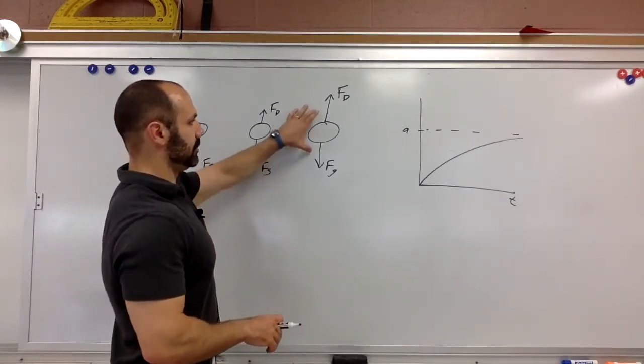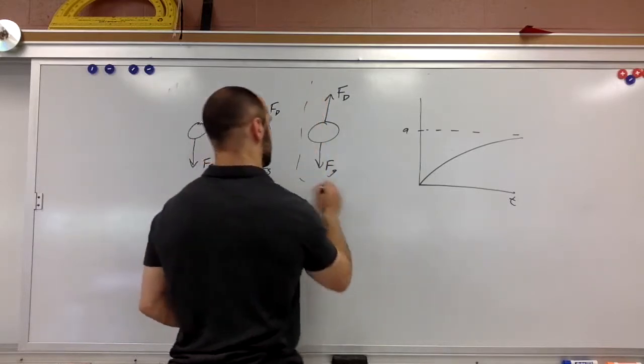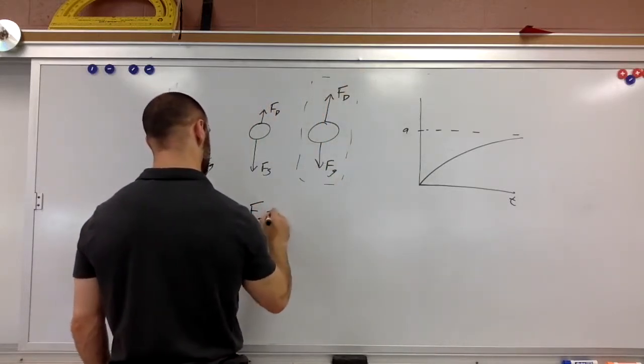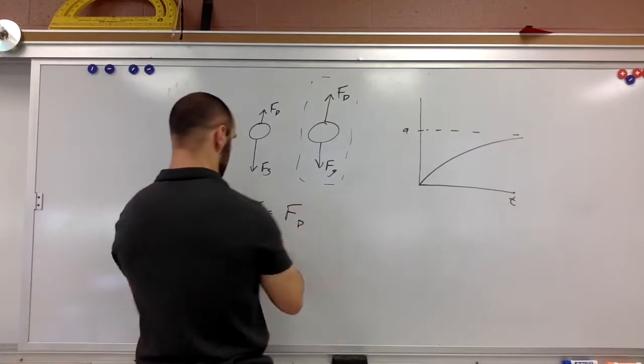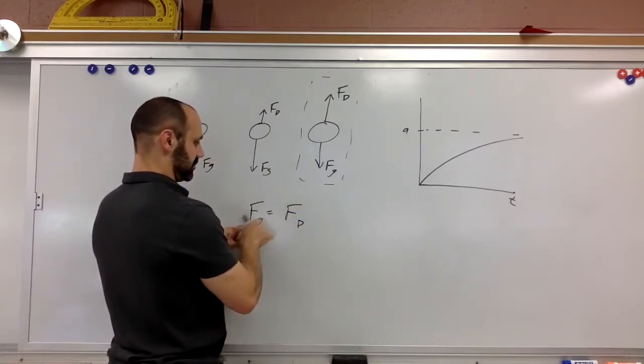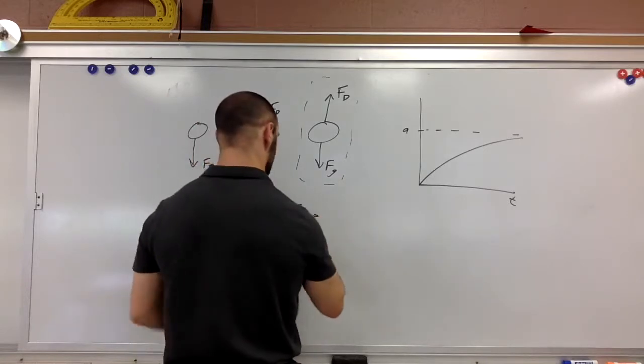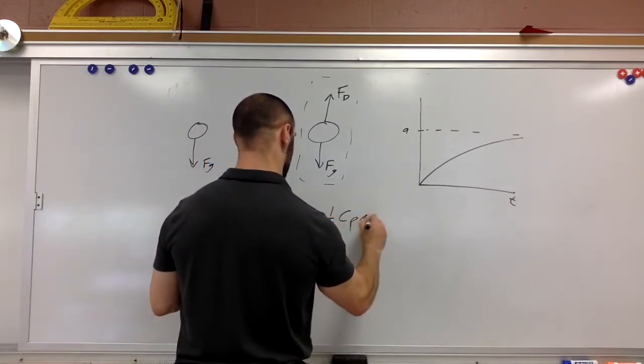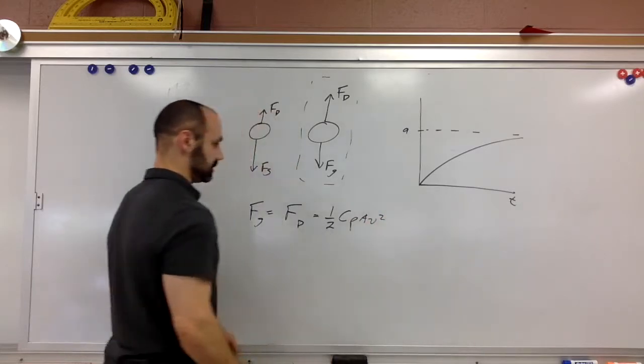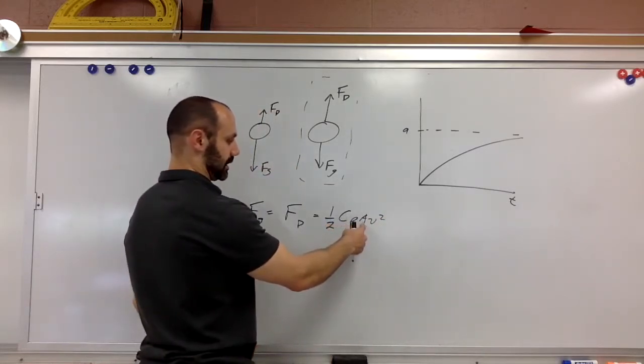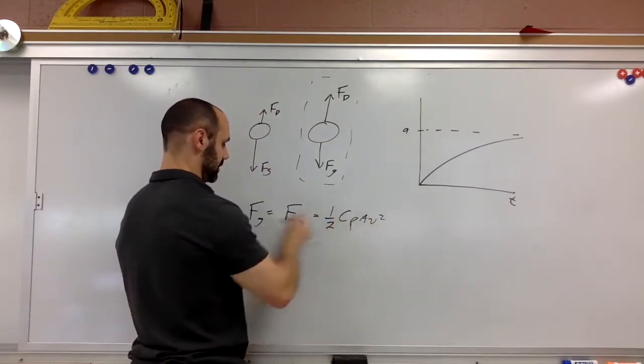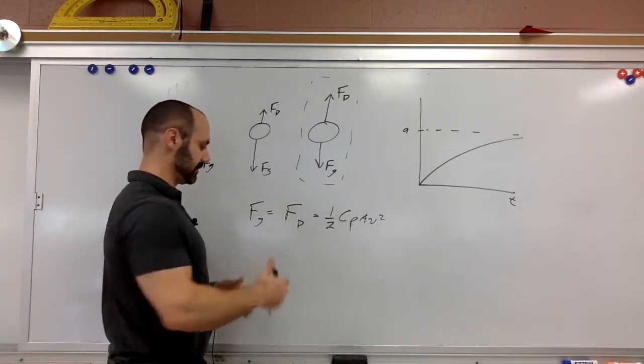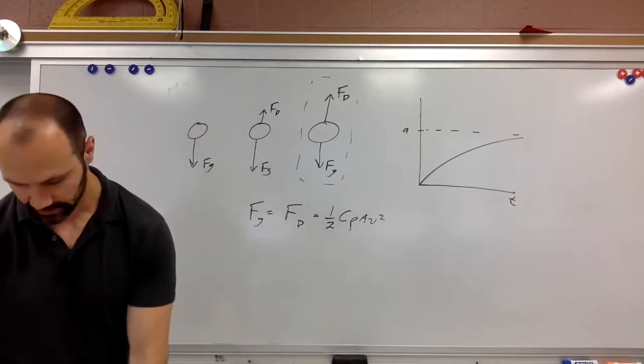And so if I know this though, if I'm asking about the terminal velocity, at terminal velocity that's when Fg is equal to Fd. When the gravitational force is equal to the drag force, that means that the gravitational force is equal to one half C rho A v squared. So if I know C rho and A, then I can solve for v if I know what Fg is. If I know the mass of the object, if I know the weight of it. And that's what our first example is.